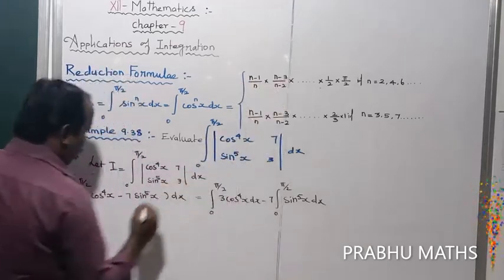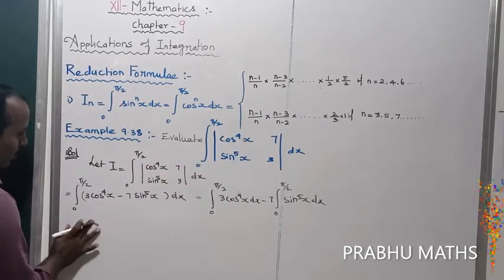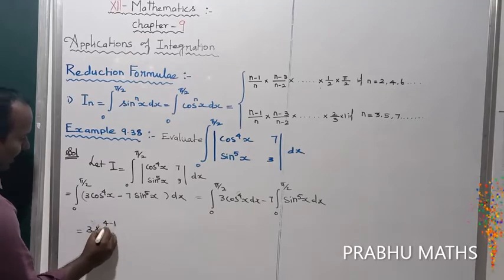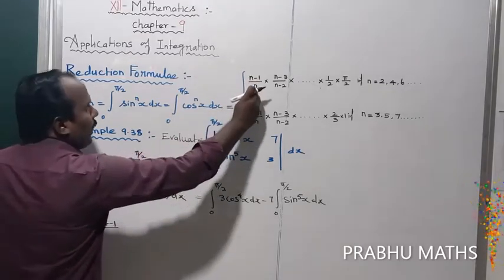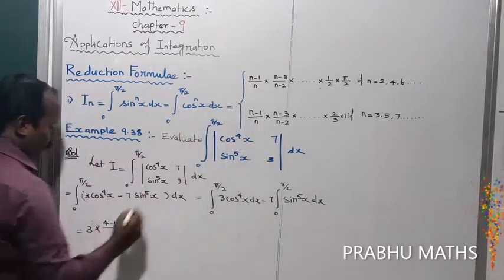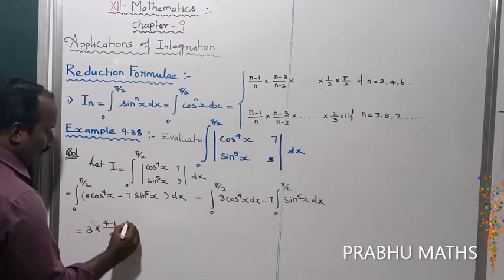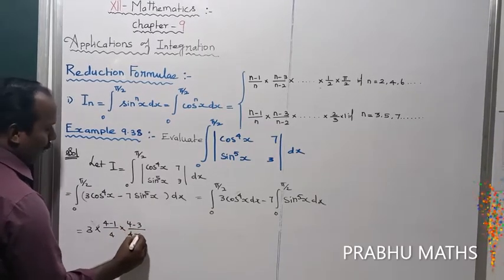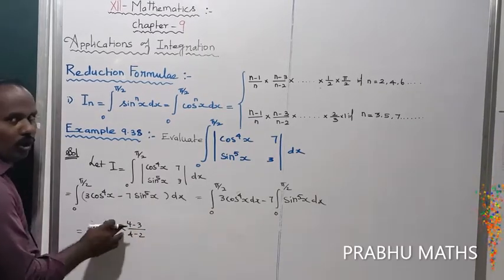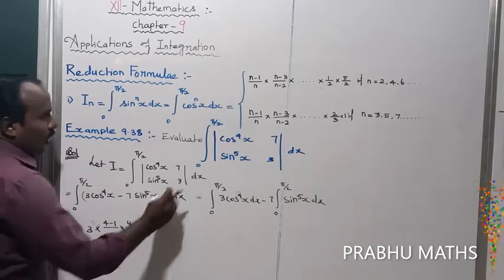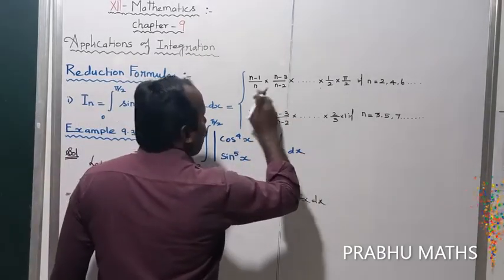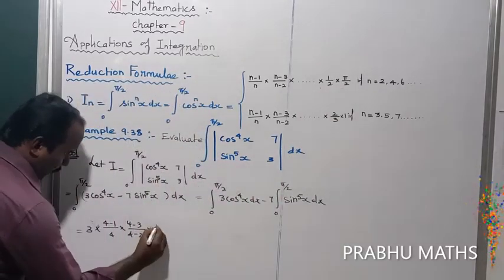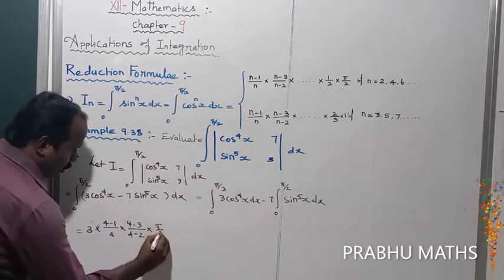For n = 4, the even reduction formula gives: 3 into (4−1)/4 into (4−3)/(4−2), which gives 1/2 as the last term. The upper limit 5/2 is then substituted. The first integration is now complete.